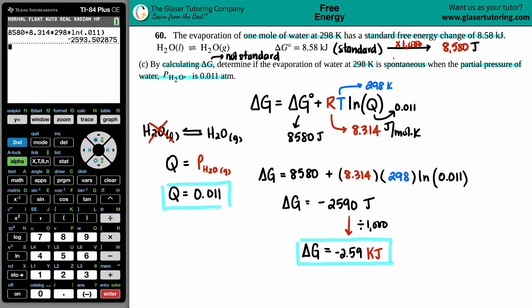So that's your Gibbs free energy for a non-standard, negative 2.59 kilojoules. And then we have to determine if it's spontaneous or not. But we're all good here because anytime that you see a negative for a ΔG, that means that it's always spontaneous. So that's how you figure out that component, and now we are done with the question.